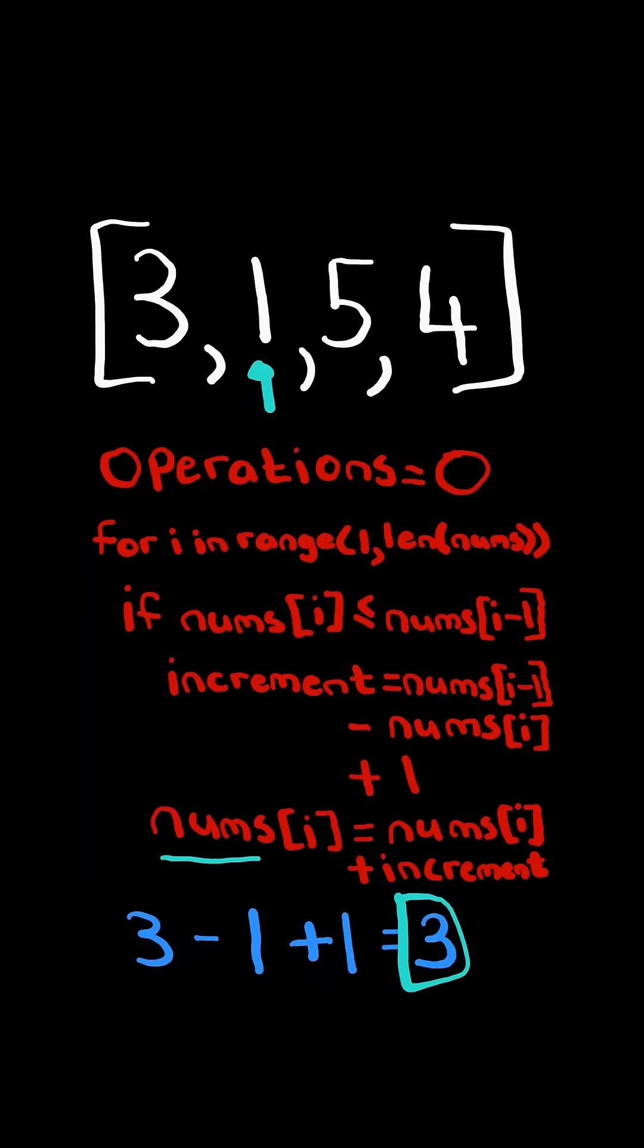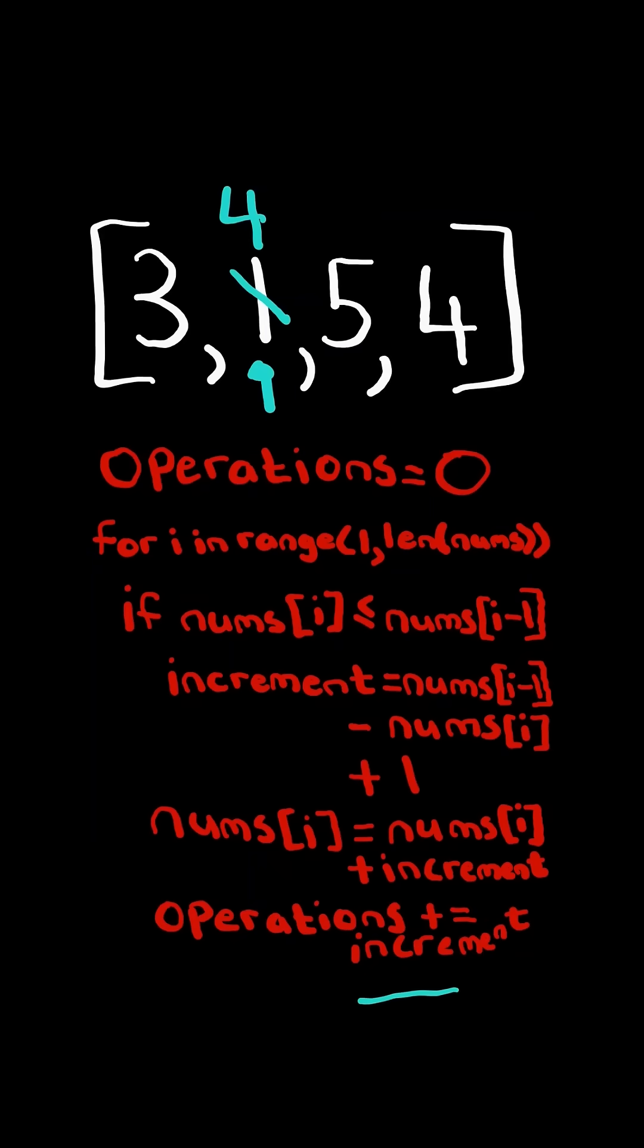This gives us the number of operations we need to apply to our current element and add the number of operations to our total operation. And we continue. At the end, we return the number of operations.